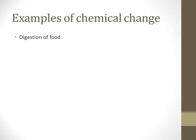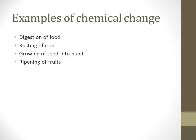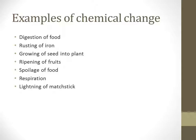Digestion of food is a chemical change because various reactions take place in the body during digestion. Rusting of iron is a chemical change. Growing of a seed into a plant, ripening of fruits, spoilage of food, and respiration are all chemical changes taking place in our day-to-day life. Lighting of matchsticks and burning of LPG are also chemical changes.